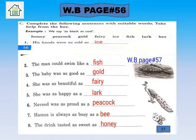The first one: 'his hands were as cold as ice' — because ice and cold are linked. The second one on page 57: 'the man could swim like a fish'. The third: 'the baby was as good as gold'. The fourth: 'she was as beautiful as a fairy'. The fifth: 'she was as happy as a lark' — lark means carefree and is a kind of songbird. The sixth: 'Navid was as proud as a peacock'. The seventh: 'Hamza is always as busy as a bee'. The eighth: 'the drink tasted as sweet as honey'.